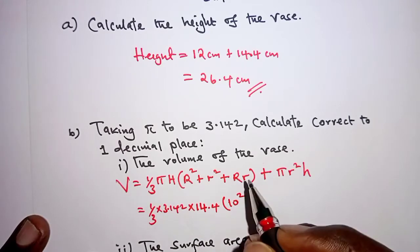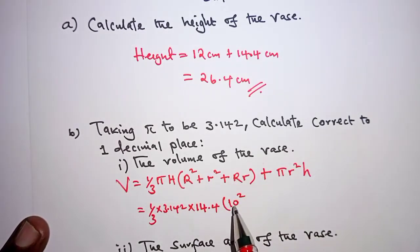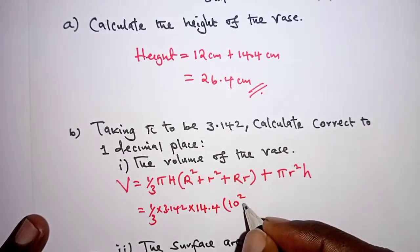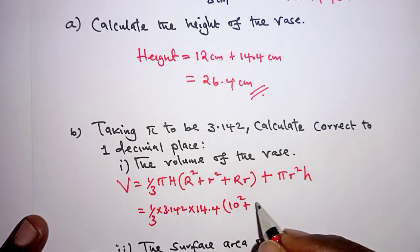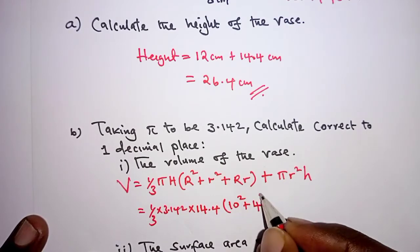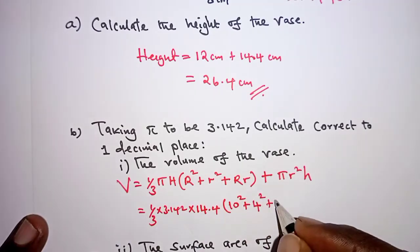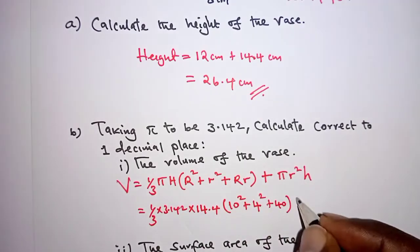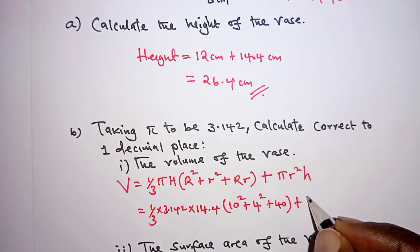into r is 10, so 10 squared, that is the diameter of the upper part is 20 centimeters, and the radius is 10, plus the radius of the lower part is 4, therefore 4 squared, plus 10 times 4, that is 40.